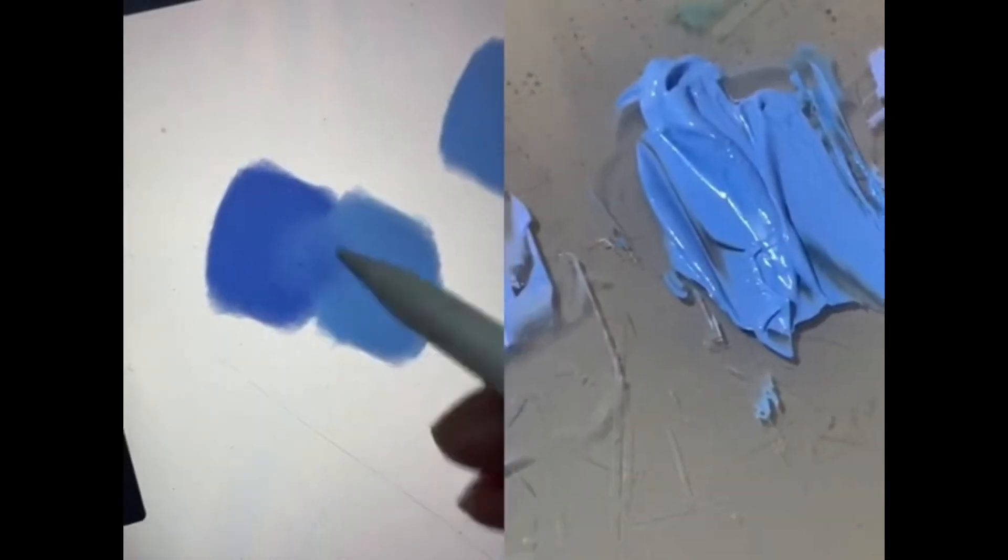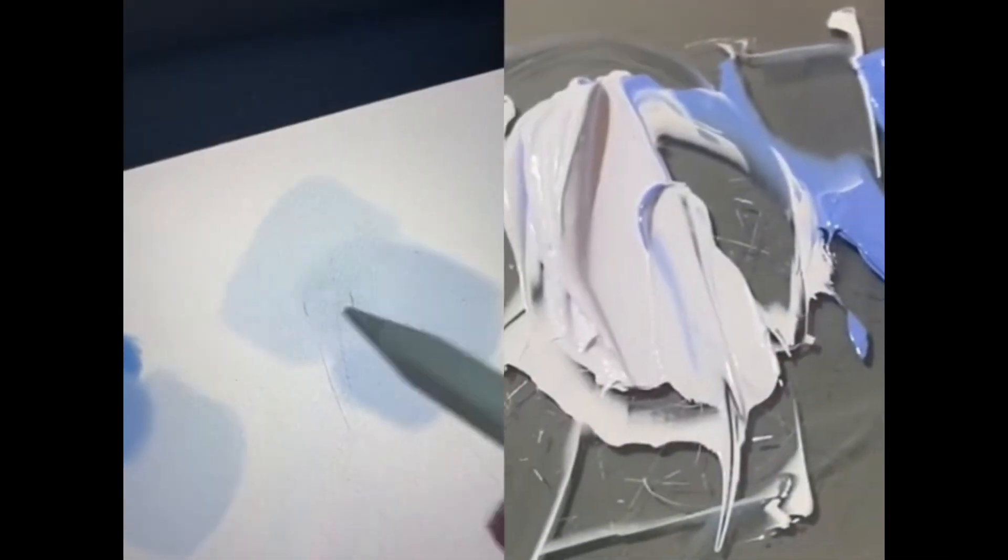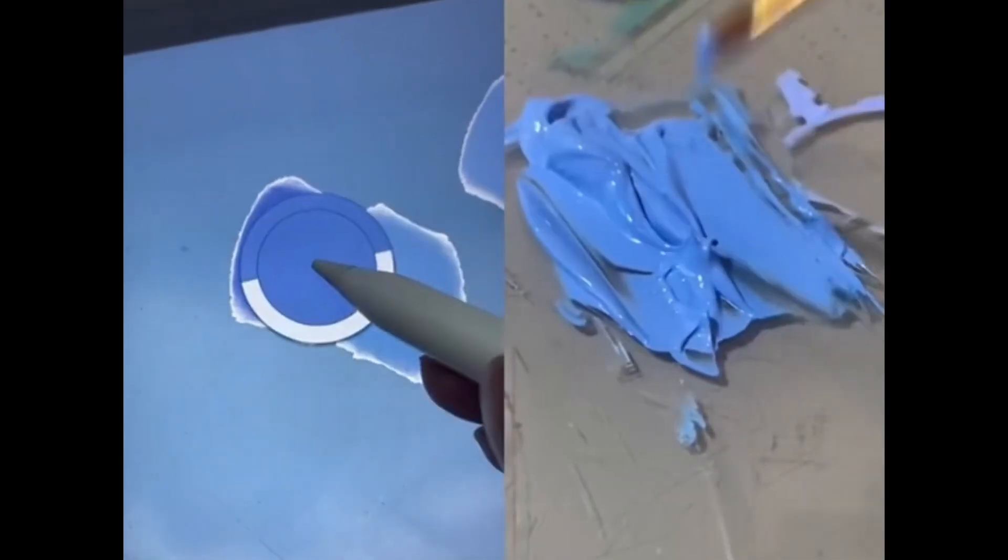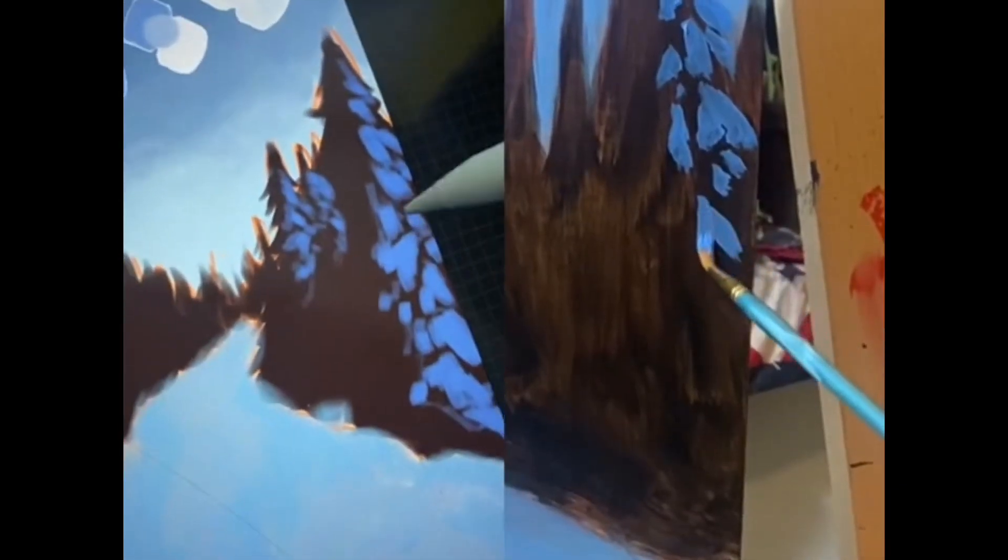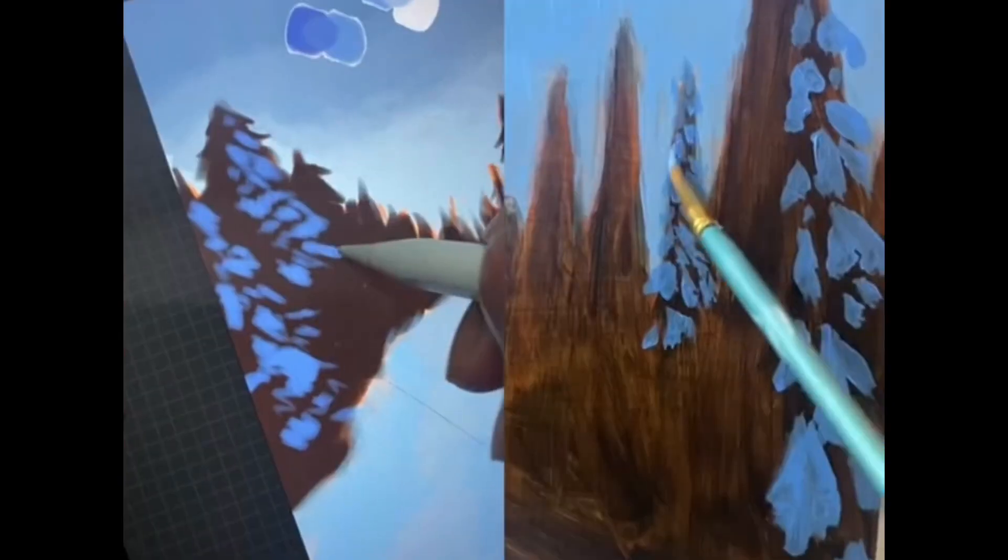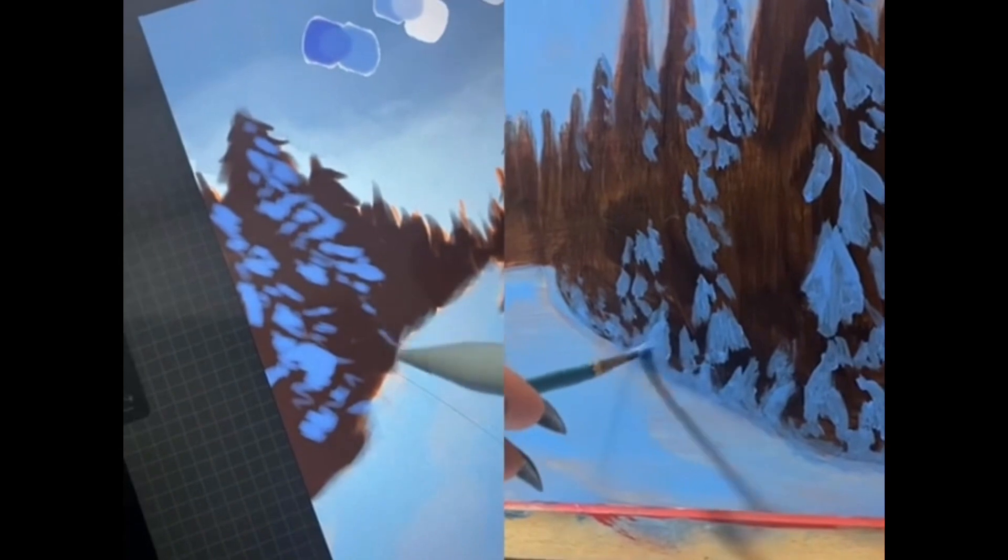Next, mix up a medium blue, light blue, and off-white. Starting with your dark blue, paint in some of the shadows in those big chunks of snow on each tree branch. The light is coming from the left, so I paint most shadow shapes on the right of the trees and towards the bottom.